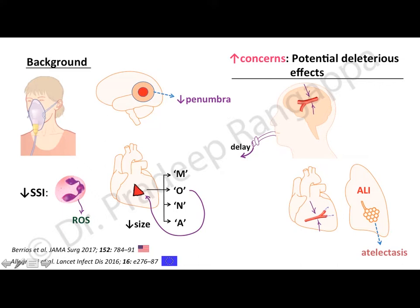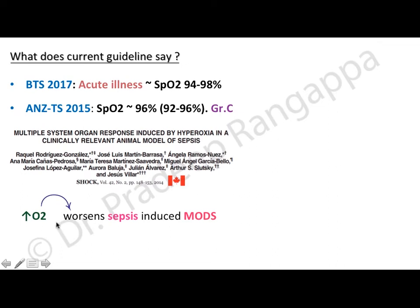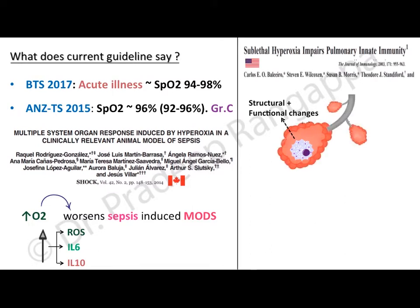Looking at animal studies, a study from a Canadian group found that increase in oxygenation leads to worsening of sepsis and sepsis-induced multi-organ dysfunction. This happens because oxygenation causes production of reactive oxygen species, and interleukin-6 and interleukin-10 production increases, leading to worsening of multi-organ dysfunction.